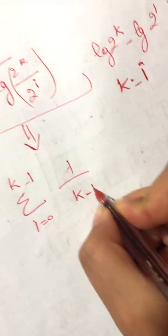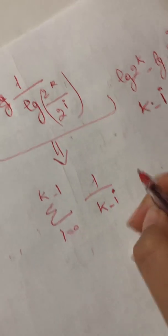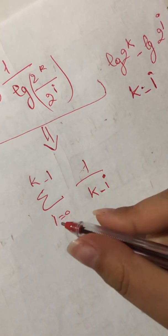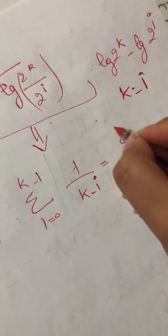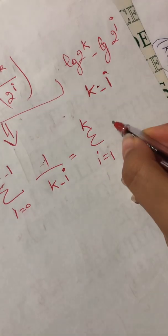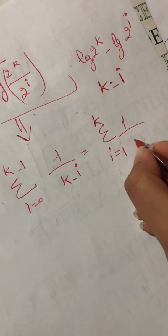So now I have this form here. Remember, 1/(k minus i) for i equals 0 to k minus 1, I can substitute it with i equals 1 for k, 1/i.